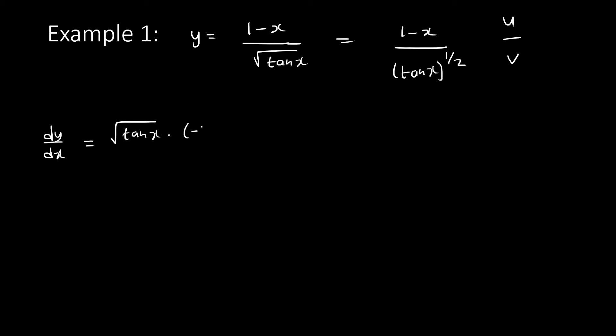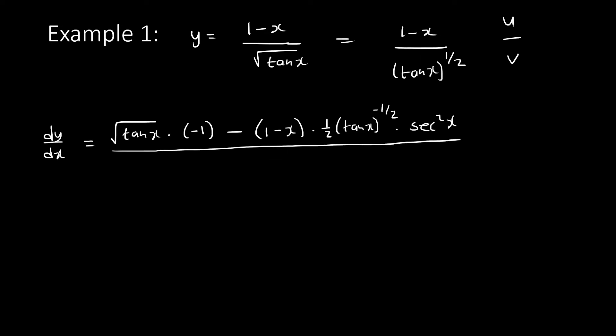The derivative of u, which is (1 minus x), is minus 1. Then minus u times the derivative of v. To differentiate v using chain rule: start with the half exponent, giving half·(tan x)^(minus 1/2), then differentiate tan x which gives sec²x. All of this goes over v-squared, which is (√tan x)² = tan x. You can write it as over tan x — that's your final answer. Don't simplify further; leave it there.